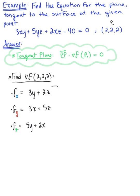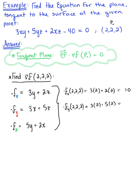We now want to take these partial derivatives and evaluate them at the given point. The partial derivative with respect to x at (2,2,2) equals 3 times 2 plus 2 times 2, so 6 plus 4 equals 10. The partial derivative with respect to y at (2,2,2) equals 3 times 2 plus 5 times 2, so 6 plus 10 equals 16.